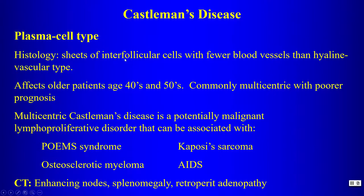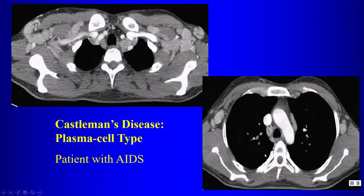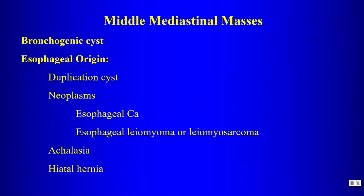The plasma cell form of Castleman disease affects older patients, is commonly multicentric, potentially malignant, and associated with Kaposi's sarcoma and AIDS. It can produce enhancing nodes, splenomegaly, and retroperitoneal lymphadenopathy. Example: an AIDS patient with markedly enhancing lymph nodes in the mediastinum and axilla — plasma cell type Castleman disease.